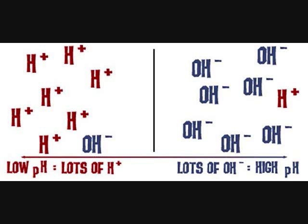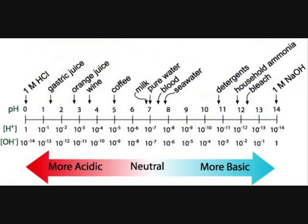By equilibrium, a high concentration of hydronium ions means a lower concentration of hydroxide ions, and vice versa. When more hydronium ions are present, the solution is said to be acidic and have a pH of less than 7, whereas the solution has a pH higher than 7 and is said to be basic when more hydroxide ions are present.